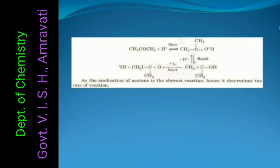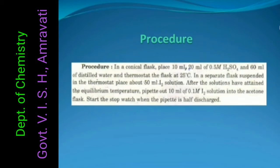Procedure: In a conical flask, place 10 ml, 20 ml of 0.5 molar H2SO4 and 60 ml of distilled water and thermostat the flask at 25 degree Celsius. In a separate flask suspended in the thermostat, place about 50 ml I2 solution. After the solutions have attained the equilibrium temperature, pipet out 10 ml of 0.1 molar iodine solution into the acetone flask. Start the stopwatch when the pipet is half discharged.